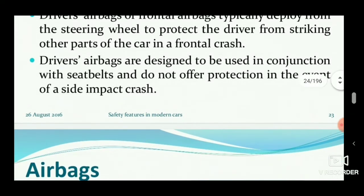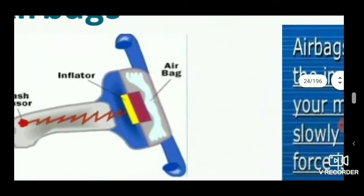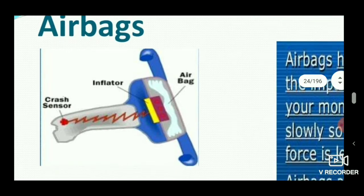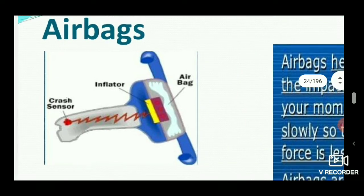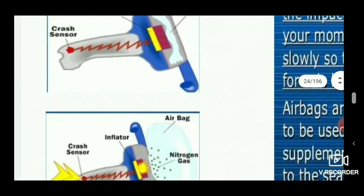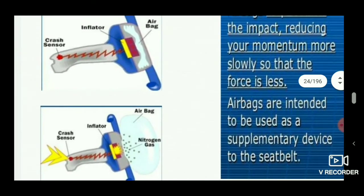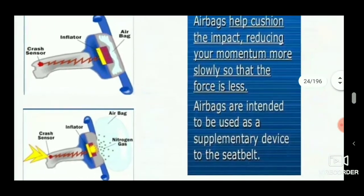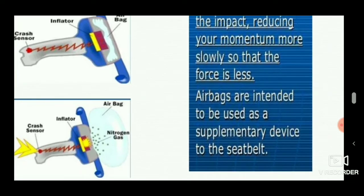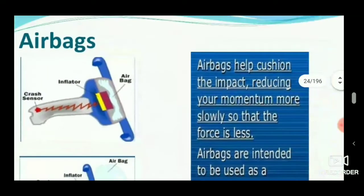This is the diagram of the airbag. The crash sensor is placed on the frontal portion. When an accident or a hit occurs, the crash sensor senses the impact and transfers the signal to the inflator. The inflator provides an electric charge to ignite the blasting powder. This ignition causes nitrogen gas to explode and fill the airbag that is folded in the steering wheel.